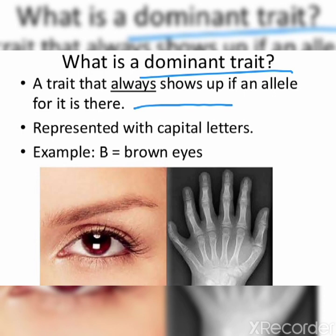A dominant trait is one where if the dominant allele for it is present, then it shows. Dominant traits are represented with capital letters — it is a rule in genetics to represent the dominant gene by a capital letter. For example, capital B is for brown eyes; B is dominant so it is given as a capital letter.